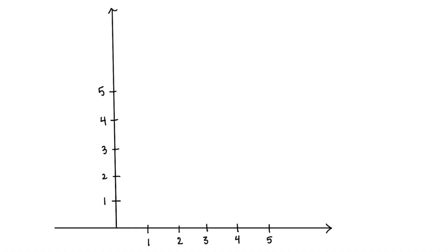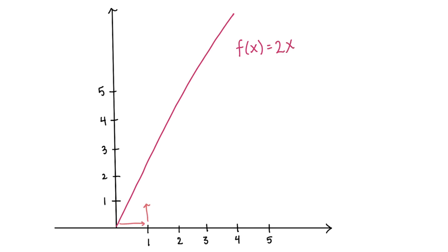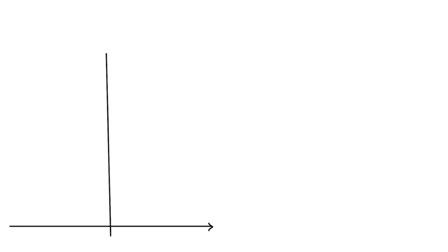First up, what are derivatives? Derivatives are just the mathematical way of saying rate of change. For example, if you have a function f(x) = 2x, the rate of change at any point on the function is 2. For every one step in the x direction, you take two steps in the y direction. You may have noticed that this is just the slope of the function — the steeper something is, the bigger the derivative.